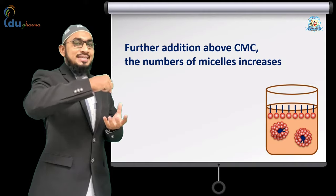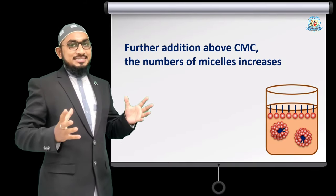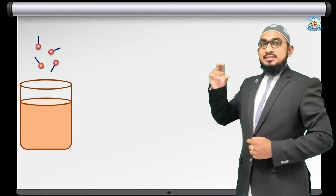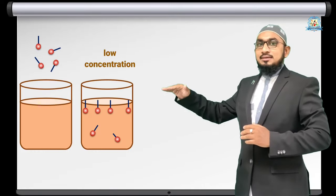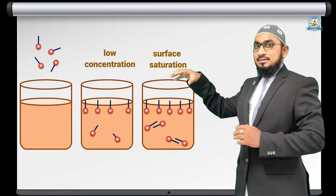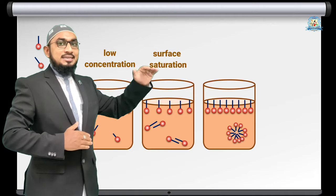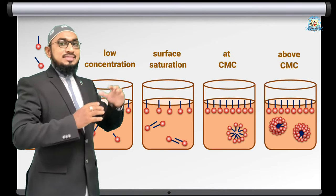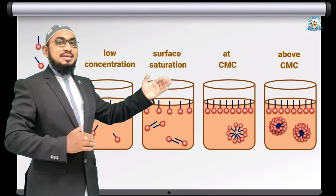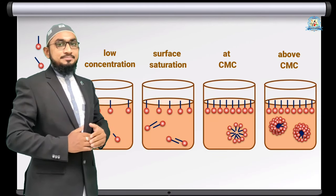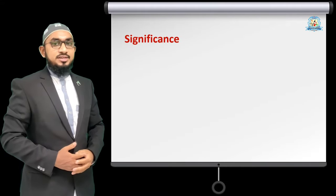Further, if we keep adding surfactant above critical micellar concentration, the number of micelles increases. At low concentration, some surfactant monomers absorb on the surface and others are present in the interior. Once the surface gets saturated, micelles start to form — this is the critical micellar concentration. Above it, the number of micelles keeps increasing.